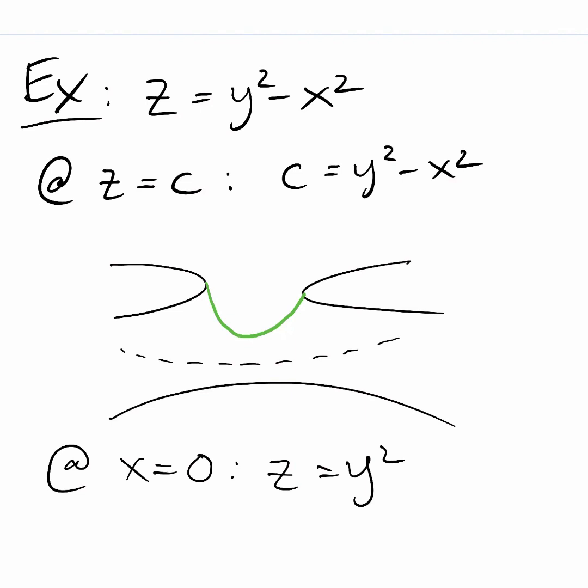Now on the other hand if we analyze at y equals zero look what we get z equals negative x squared. It's a parabola again this time it's in the xz plane instead of the yz plane but also it's opening downward. So this parabola is flat there in the xz plane has its vertex at the origin and opens downward.